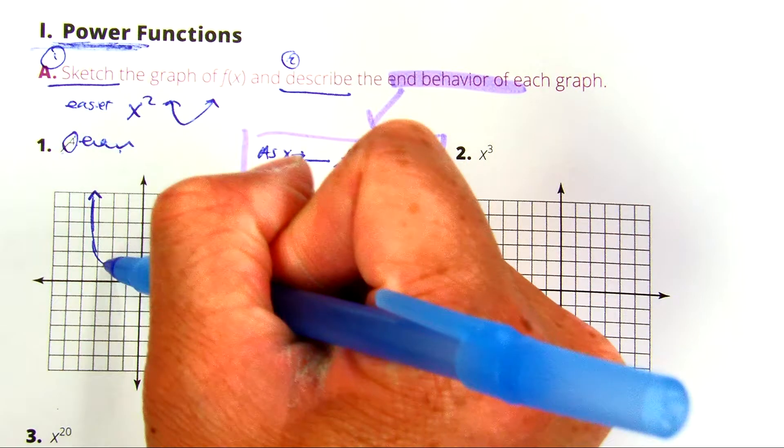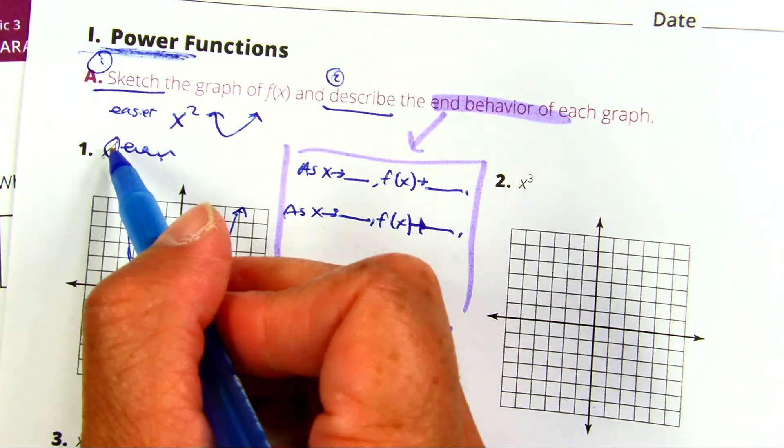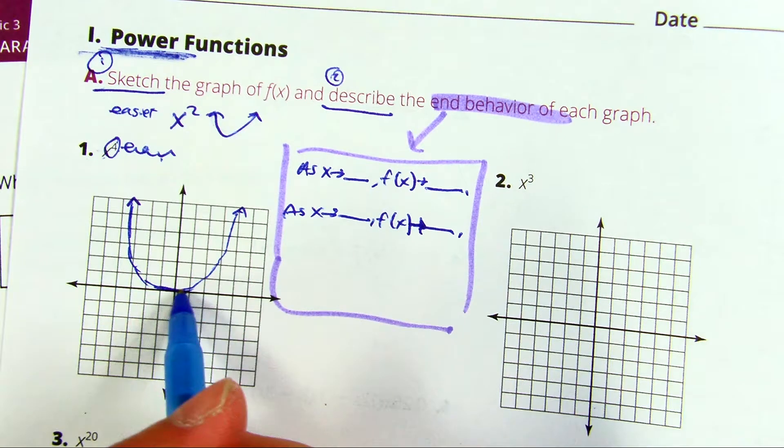So my graph's going to look something like this. Remember, the higher the degree, so if it was like 10, 20, or 40, it's going to become more flat near the origin.